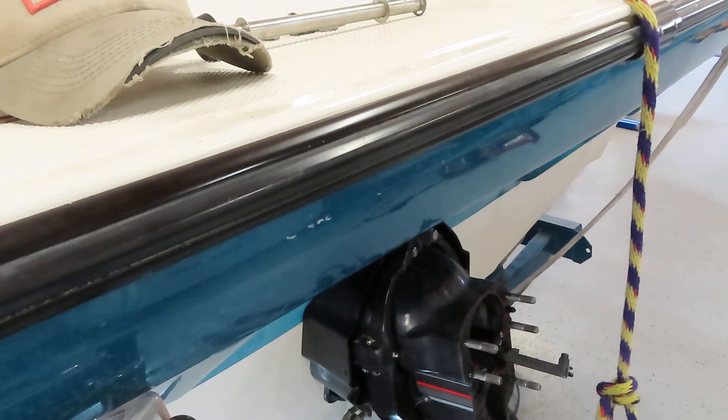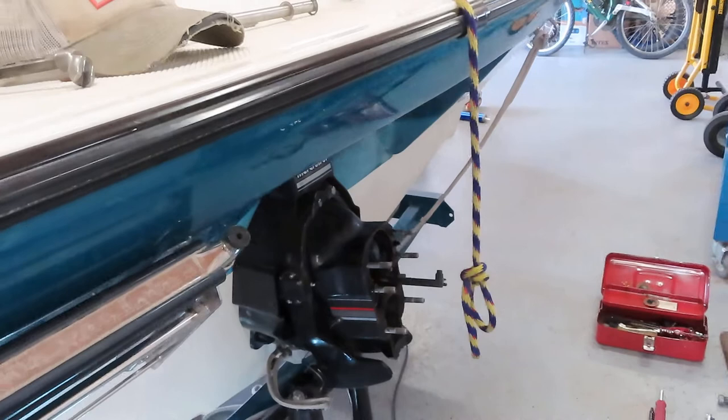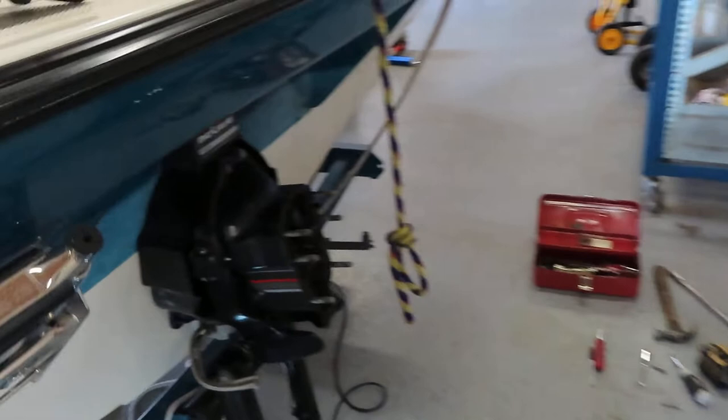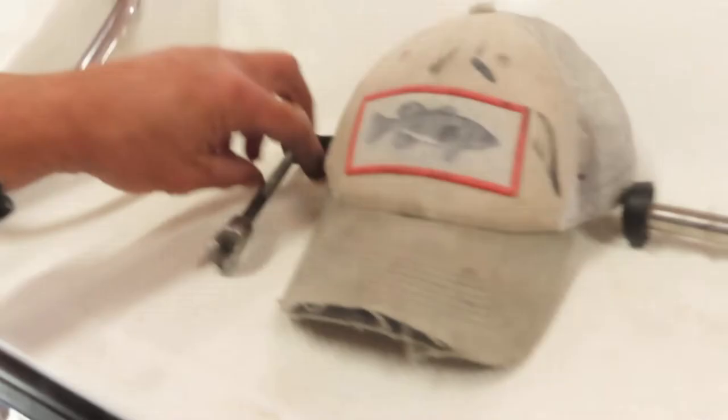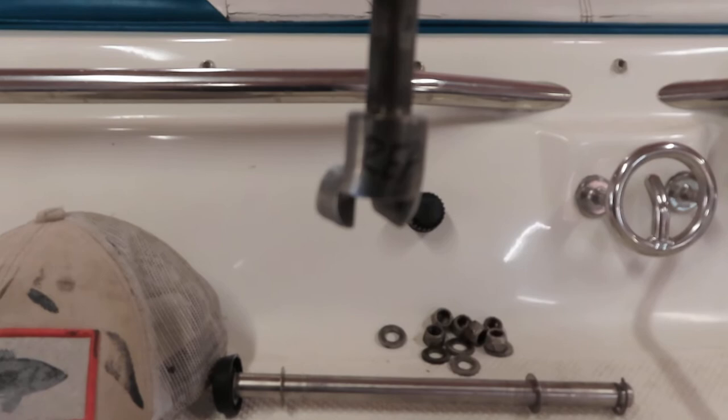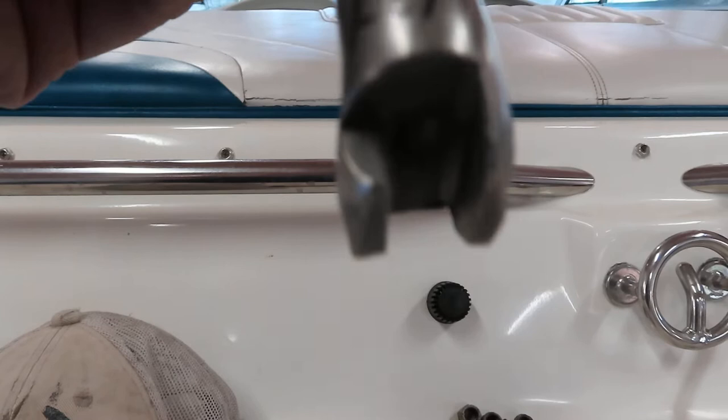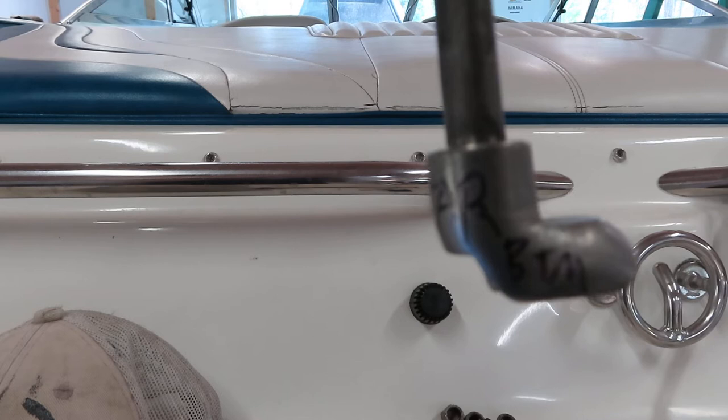So again first thing you do is take that lower unit off. Very easy, six bolts. Put your boat in forward gear and there's a little foot up in there that'll line up like this like towards the front of the boat. So when you pull the lower unit up it slides out of this little channel on this foot. This is what's shifting the gears with your cable.